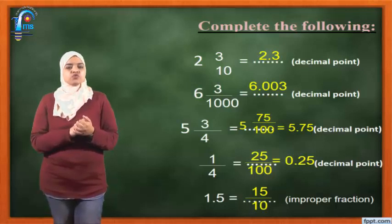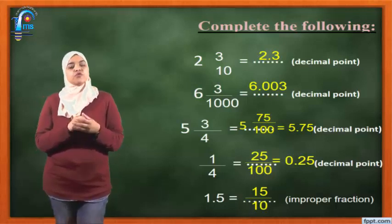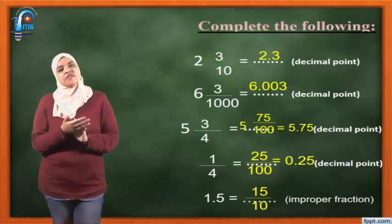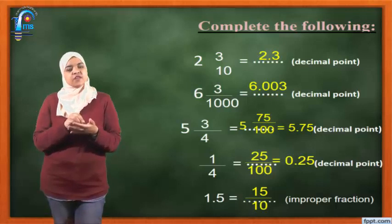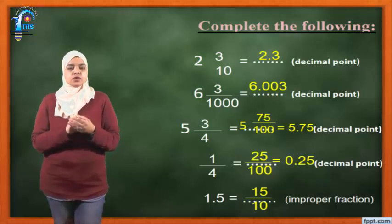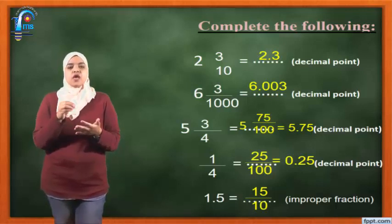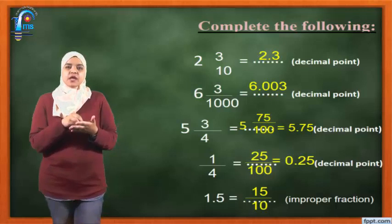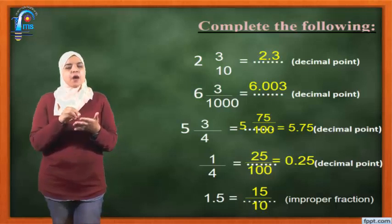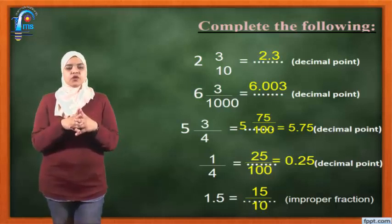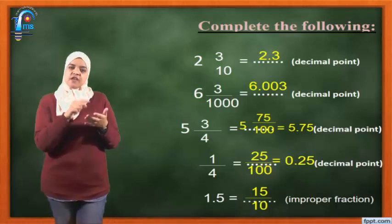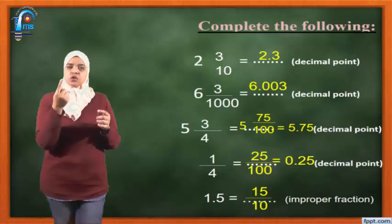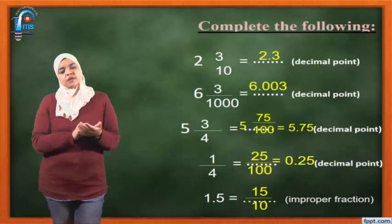1.5 equals what? I want to write it as an improper fraction. I'm going to hide the decimal point, so the number will be 15. I put 15 in the numerator. How many numbers after the decimal point here? Just one place. So 15 over 10. If there is only one number after the decimal, the denominator will be 10.